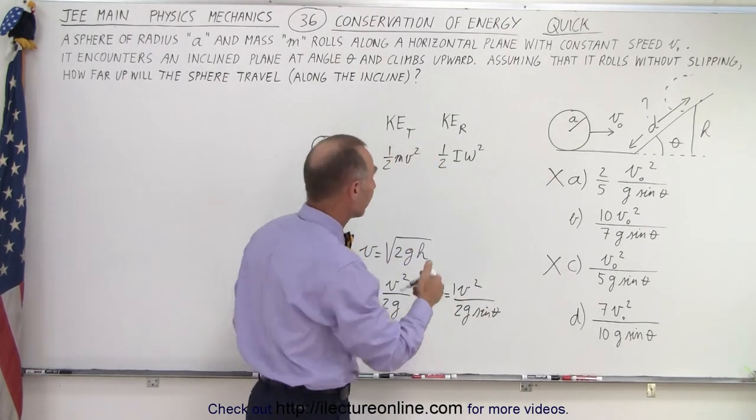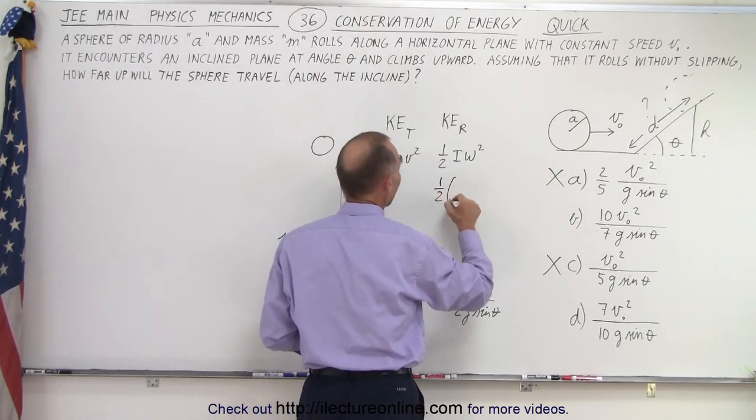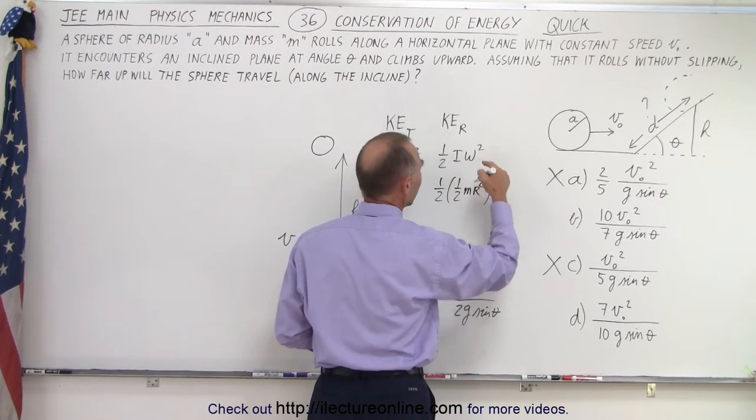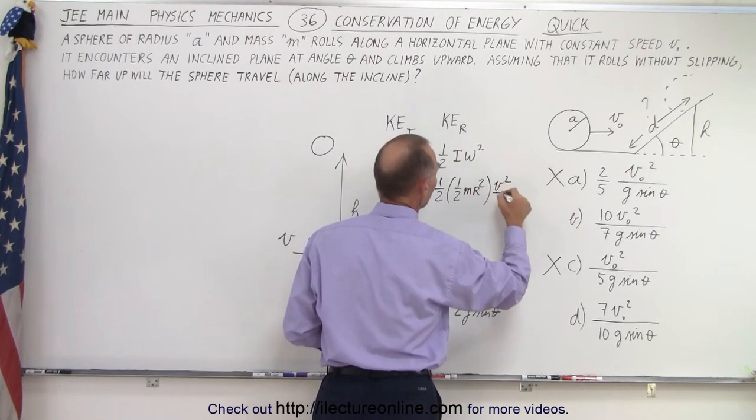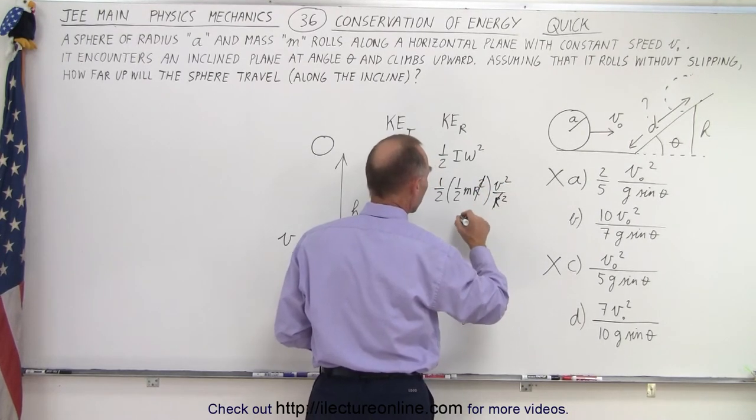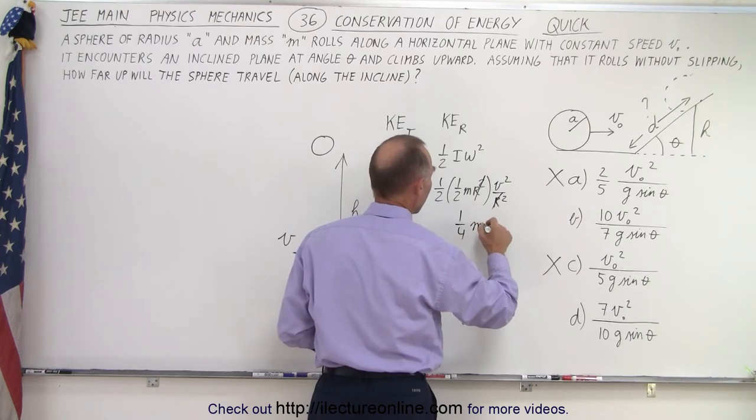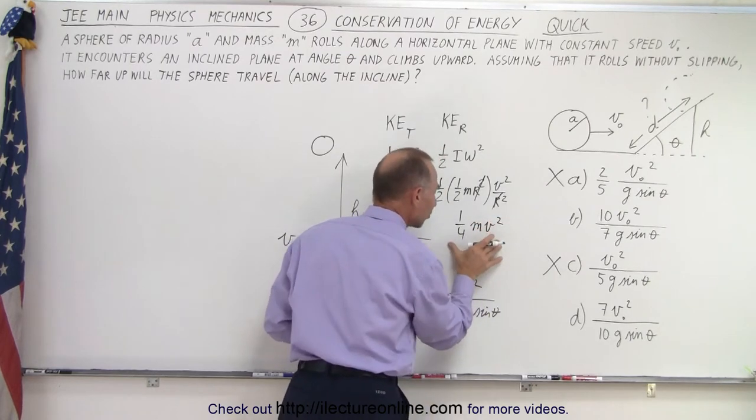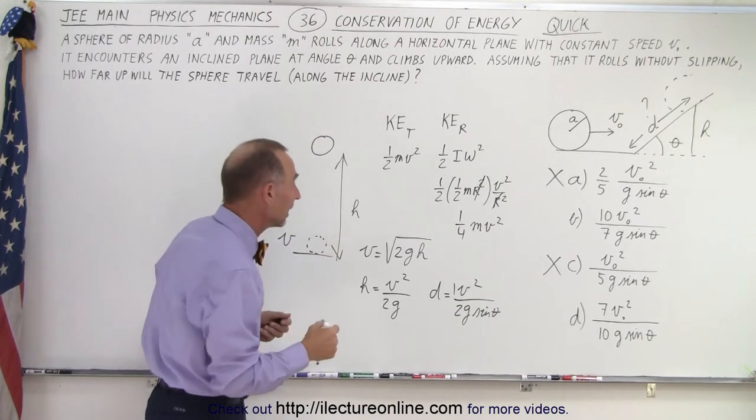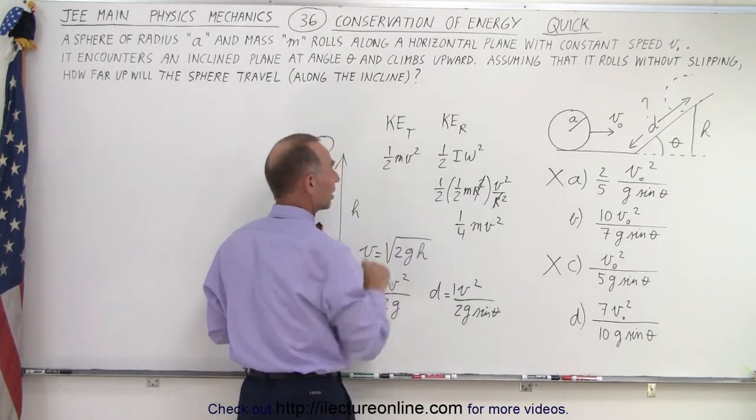then that would be one half times one half m r squared. And omega squared would become v squared over r squared. The r's would cancel out and we end up with one quarter mv squared. So, the maximum amount of energy the rotational kinetic energy can add is half the translational kinetic energy.